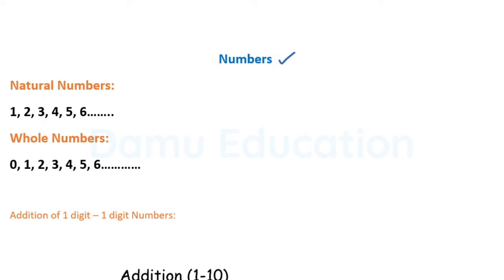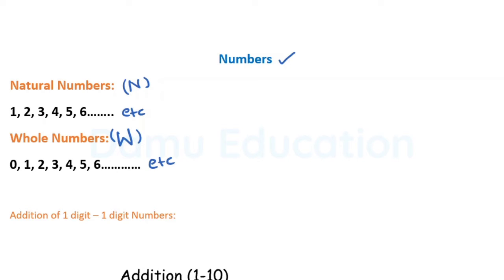These two types of numbers are used for the addition of one digit and two digit numbers. The first type is natural numbers, denoted with capital N. Natural numbers start from one, two, three, four, five, six, and so on — they are endless. The numbers which start from zero come under whole numbers, denoted with capital W.